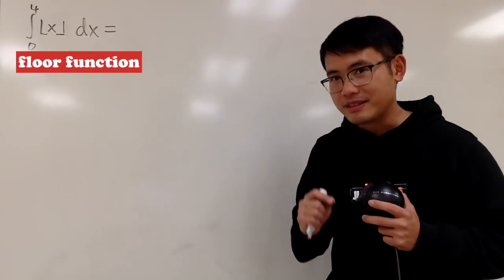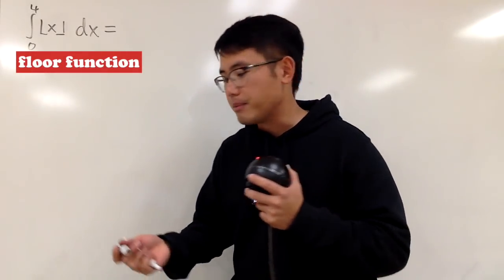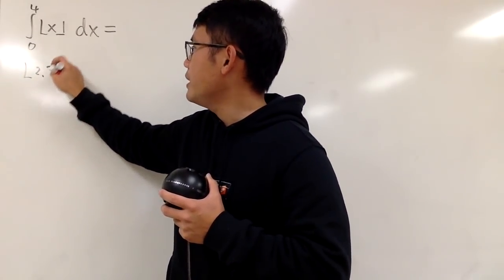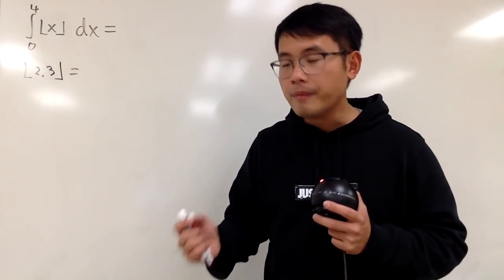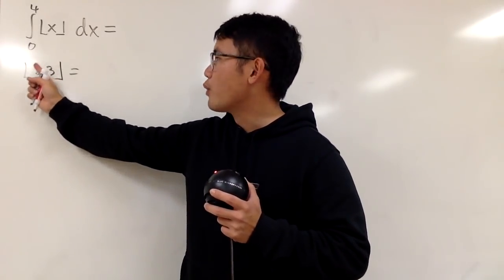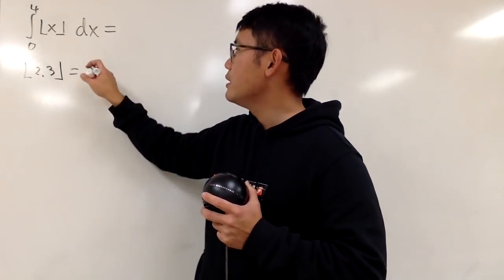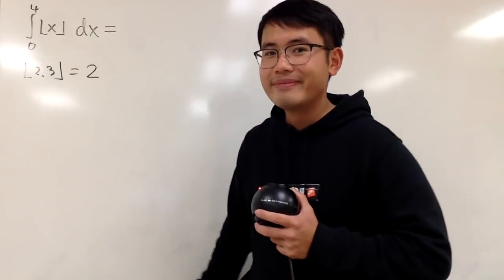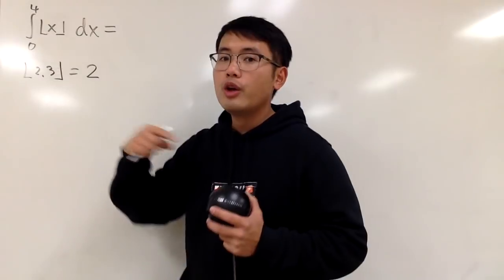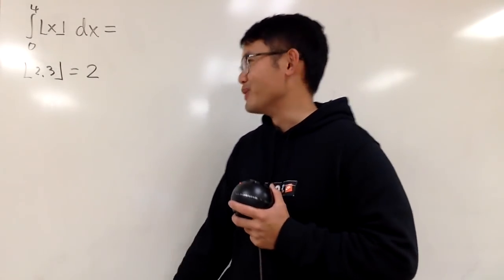So, let's see. Let's discuss what the floor function is first. And I'll demonstrate by some examples. Suppose you are looking at the floor of 2.3. We are going to find the greatest integer that's less than or equal to this value here. Of course, you have 2.3. The biggest integer that's less than 2.3 is 2. The way I like to think about the floor function is that when you see a decimal number, you are always going to round down. That's pretty much how I like to look at it.